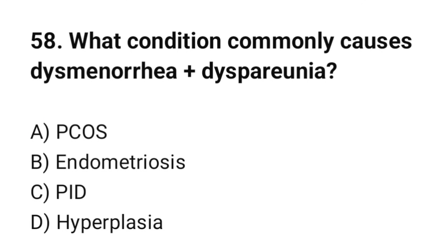Question number 58. What condition commonly causes dysmenorrhea and dyspareunia? The correct option is B: Endometriosis.